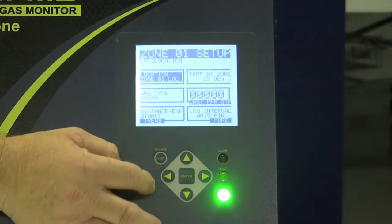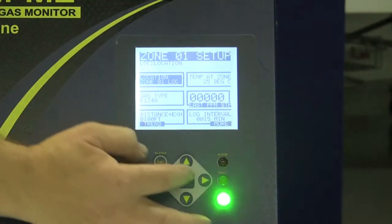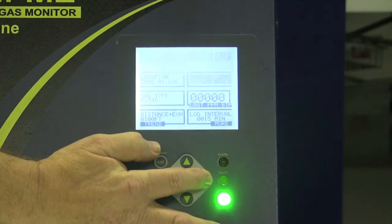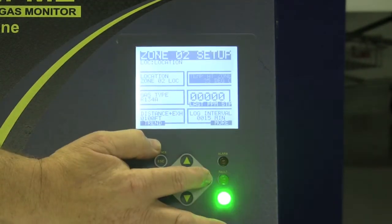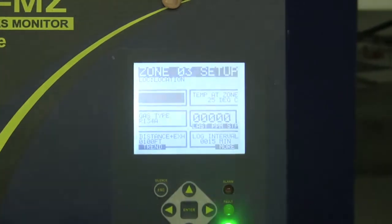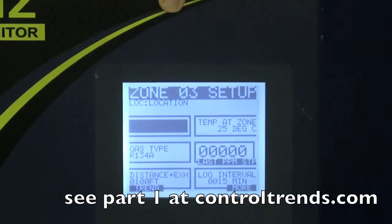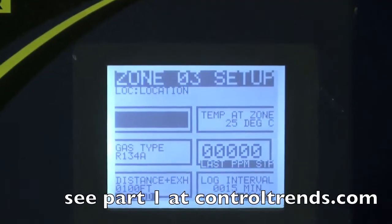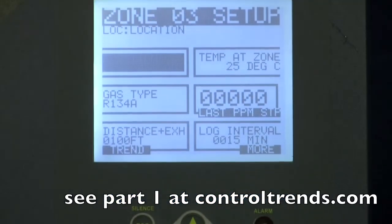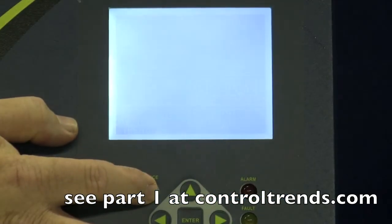It's very simple to go from one zone to another. We were just looking at zone one, you can push the left arrow, and now we're in zone two, press it twice again, zone three. You can literally set up all 16 zones in less than five minutes with the front panel programming. It's easy to program, easy to operate.